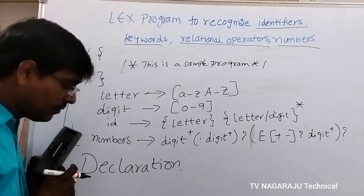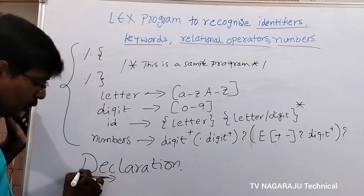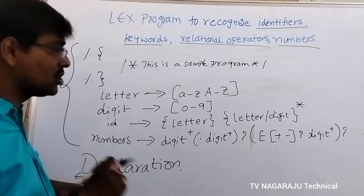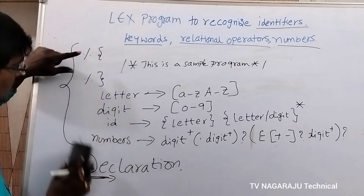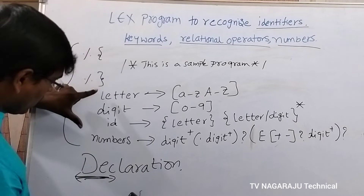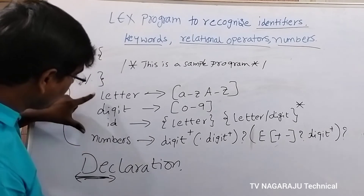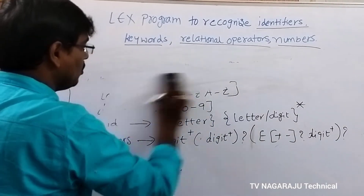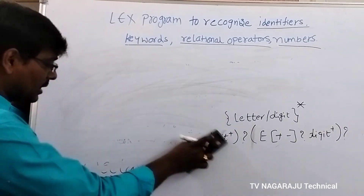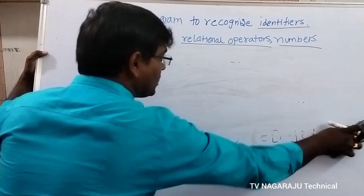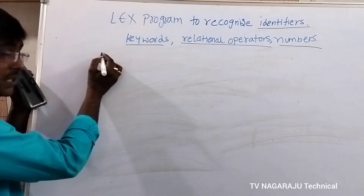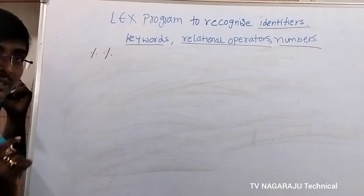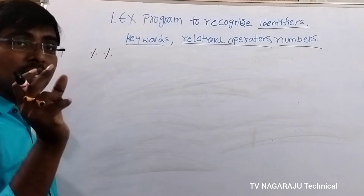After completion of the declaration section, you write the transition section — that is, the transition rules. Note that regular expressions are not enclosed within the %{ %} symbols. After the first section, we move to the second section: the transition rules, specified between %% and %%. The transition rule contains two things: a pattern and an action.